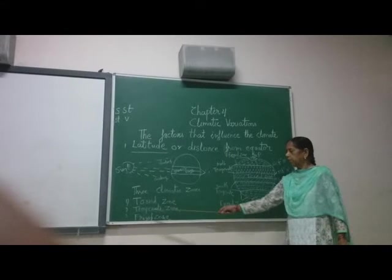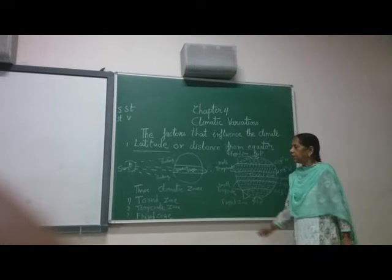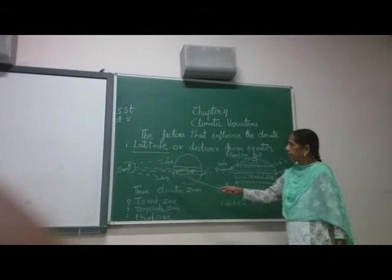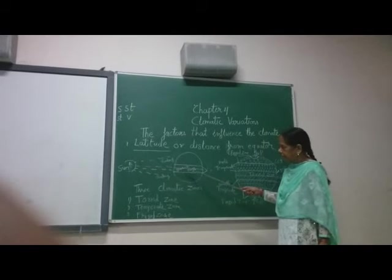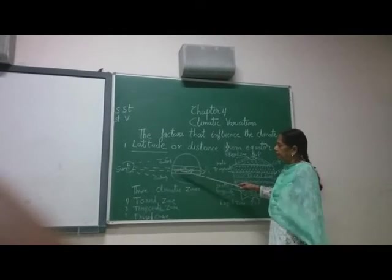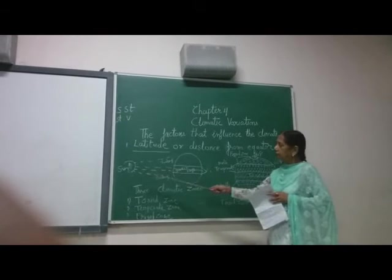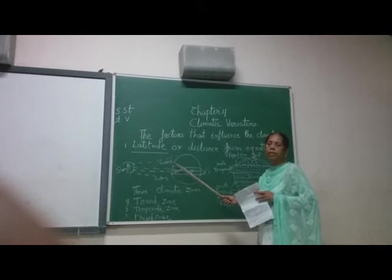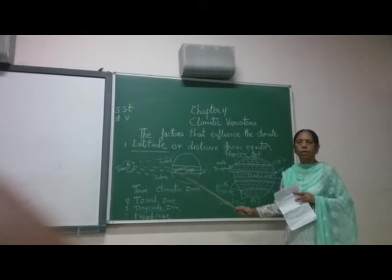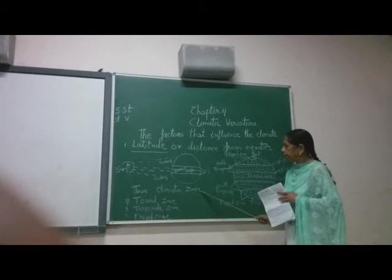The climatic zone is divided into three parts. Number one, torrid zone. Number two, temperate zone. And number three, frigid zone. The middle part where the sun's rays fall directly is the hottest part. And when we go to the north and when we go to the south, the rays of the sun become more oblique — somewhere slightly oblique and somewhere fully oblique.